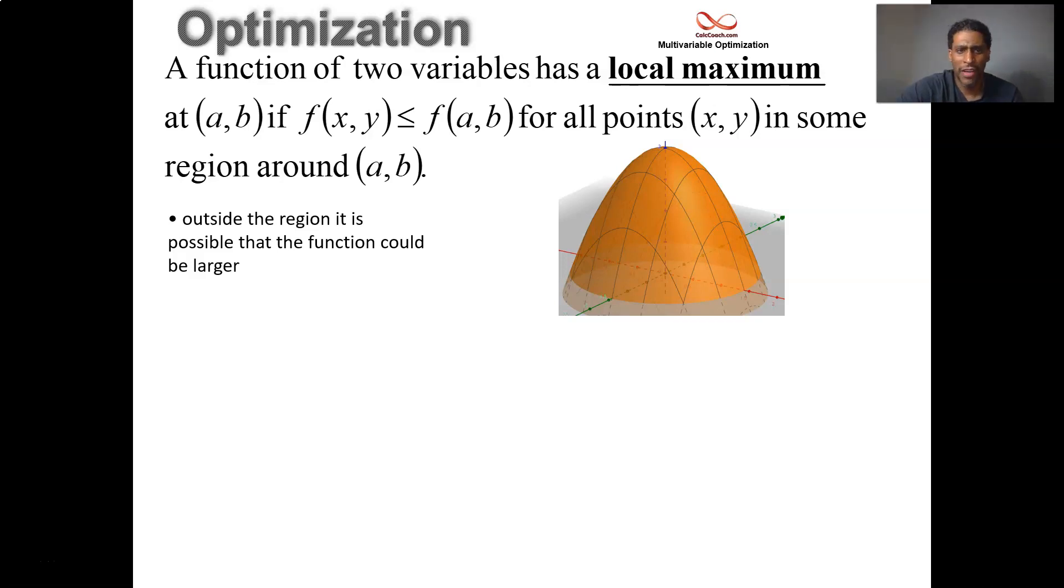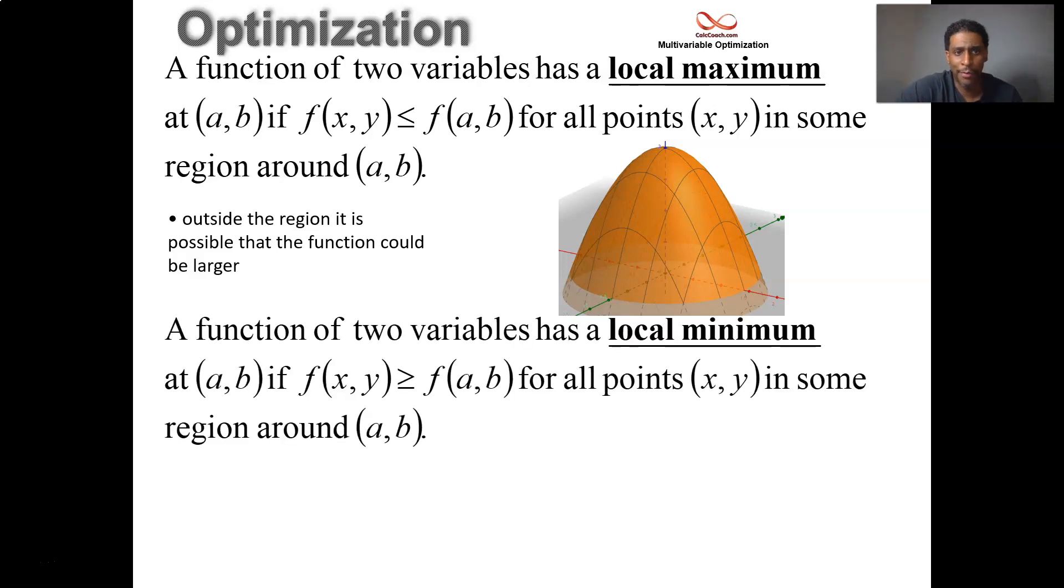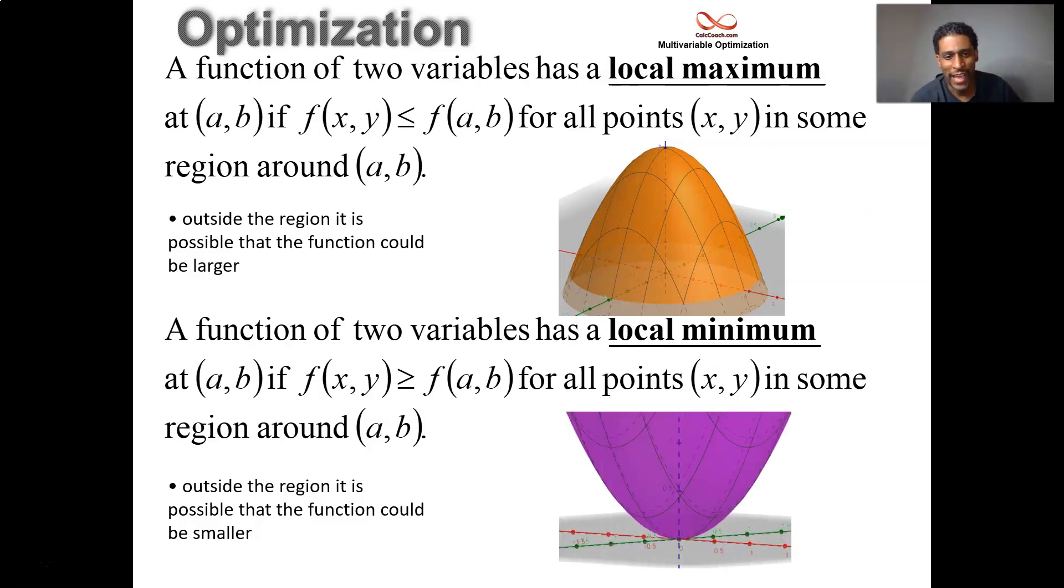A function of two variables has a local minimum at a point if it's the smallest value in some region around the point. Think of like a circle around the point and you want to have all the values plugged into the function. The local minimum value is the z value that comes out when you plug a,b in. Outside the region, maybe it will dip and become lower than that. But locally though, it is the minimum. It's the minimum value of the function, the z value that we're talking about. Local maximum value of the function.